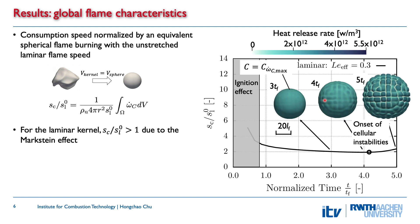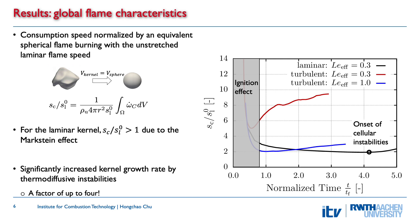If we look at the flame topology, illustrated by an isosurface of the progress variable colored with heat release rate, the laminar kernel has initially a smooth surface. As the kernel grows, even though it is laminar, it builds cellular structures. The onset of these cellular instabilities defines a critical radius, and local curvature strongly affects the heat release rate. Comparing the two turbulent kernels — the blue and the red lines — the non-unity Lewis number kernel has much higher consumption speed, about a factor of 4. Thermodiffusive instability significantly facilitates flame kernel growth.